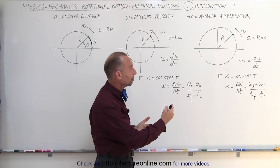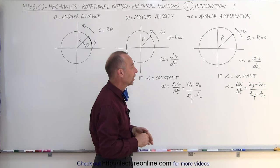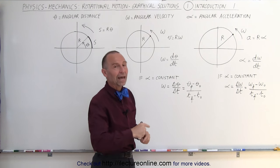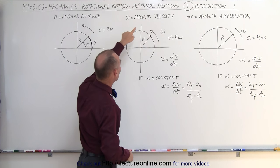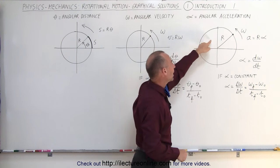Again, radians is a non-unit, so we could simply write as 1 over second squared. So these are the basic concepts of angular motion. We have angular distance or angular displacement, we have angular velocity, and we have angular acceleration.